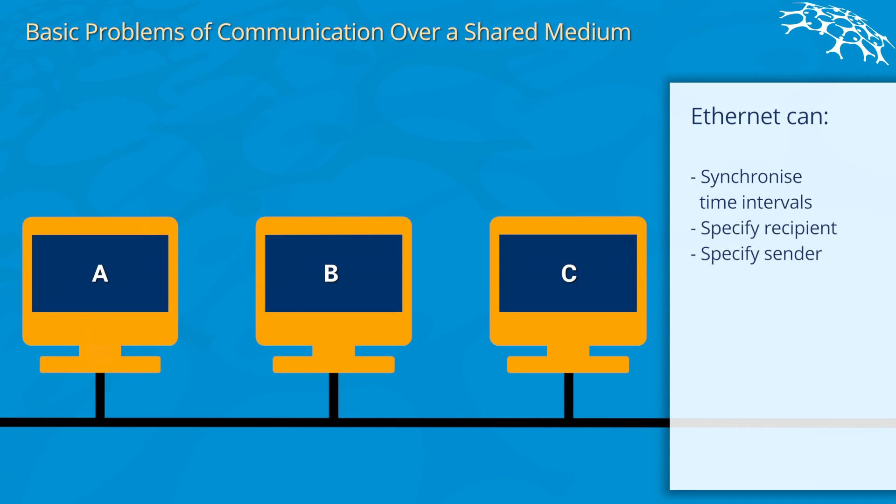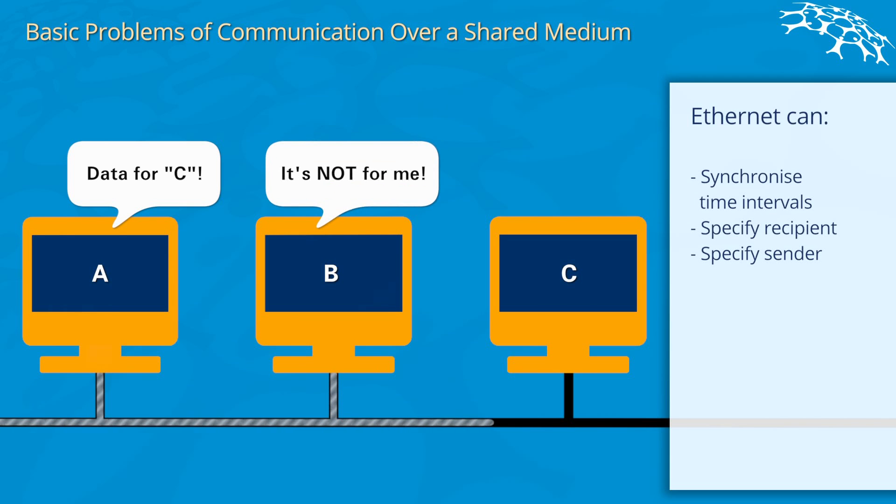Also it can specify the recipient and the sender. So if A wants to send data for C, computer B will know, oh this data is not for me, and computer C will know, oh this data is for me.